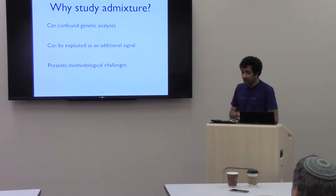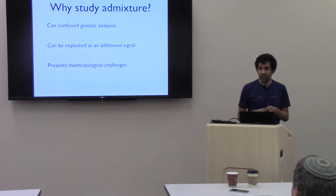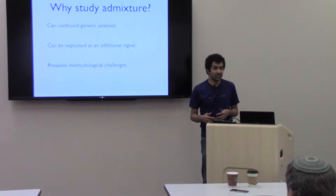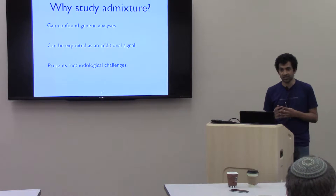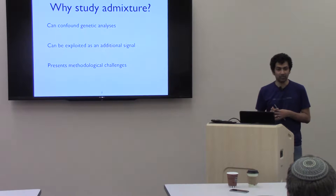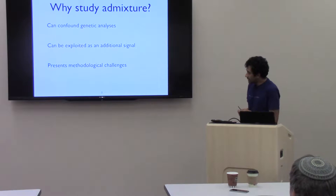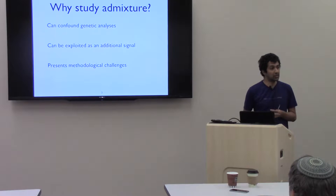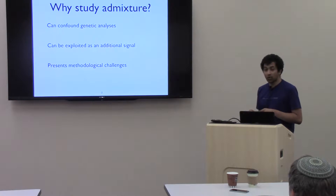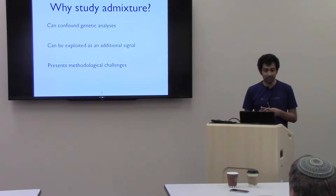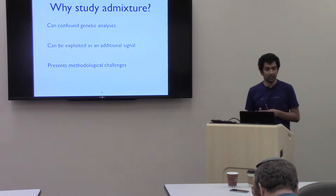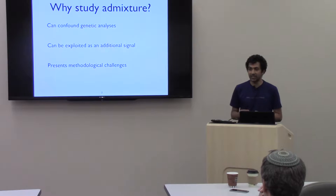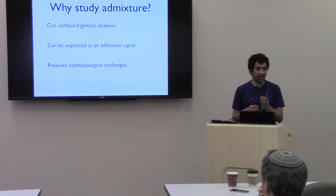Second, if we actually learn about admixture and how it affects the structure of the genome, we can use this to gain additional power. Admixture is an important source of signal we can leverage to do interesting analyses not possible in homogeneous populations. From a methodological point of view, there are lots of very interesting statistical and computational challenges that come up here, and we've done some work in dealing with some of these problems.